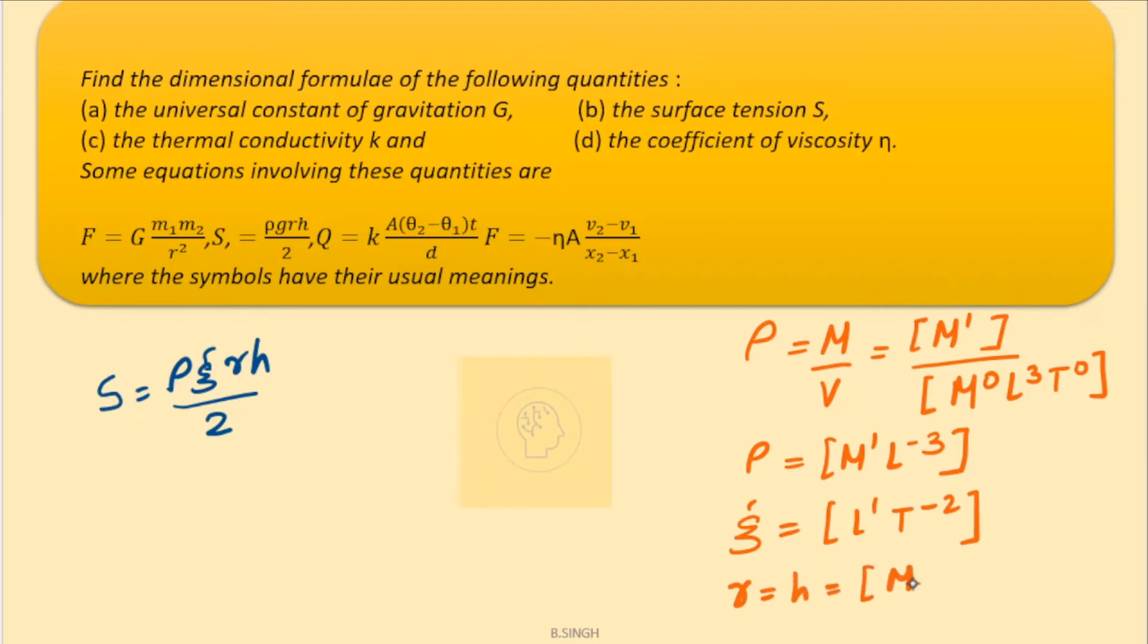Let's substitute all these in our expression to figure out the surface tension dimension. So dimensions of surface tension will be equals to rho, let's substitute the value of rho here, that is M1 L minus 3, multiplied with dimensions of g which is L1 T minus 2, and finally the dimensions of r and h.